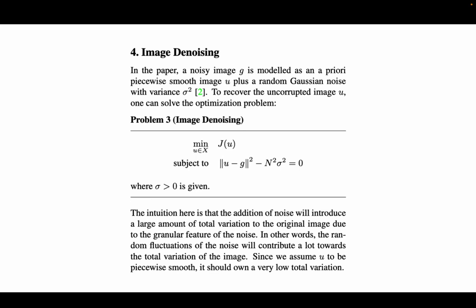And next he proposed problem 3, which is the image denoising problem. It is formulated a little bit differently. And here we assume that the image u is corrupted by Gaussian noise of variance sigma squared. But this sigma is known beforehand, which you can obtain from a few statistical methods.